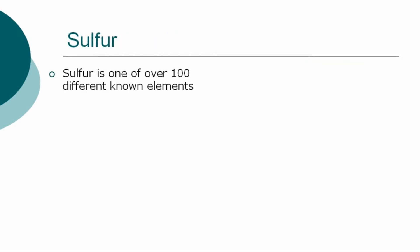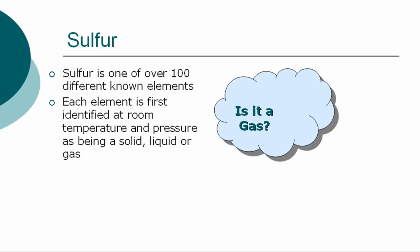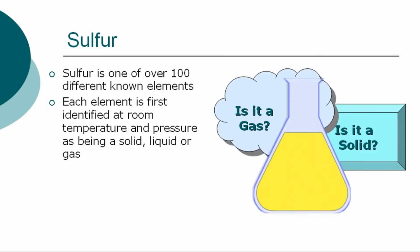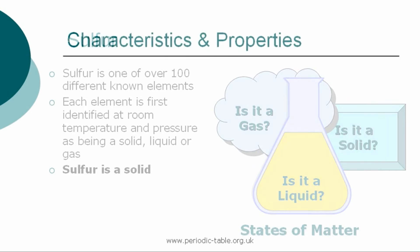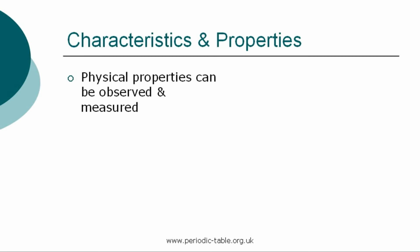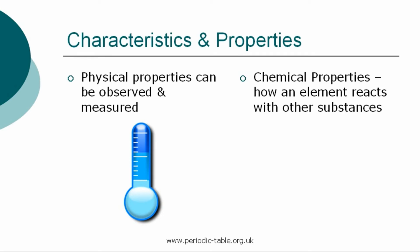The element sulfur is one of over 100 different chemical elements known to modern chemistry. Each element is first identified at room temperature and pressure as being a solid, liquid, or gas, referred to as states of matter. Sulfur is a solid at normal room temperature and pressure. Each element has physical properties that can be observed and measured, such as color, density, and odor. The chemical properties are the characteristics that determine how a substance will react with other substances such as water or oxygen.